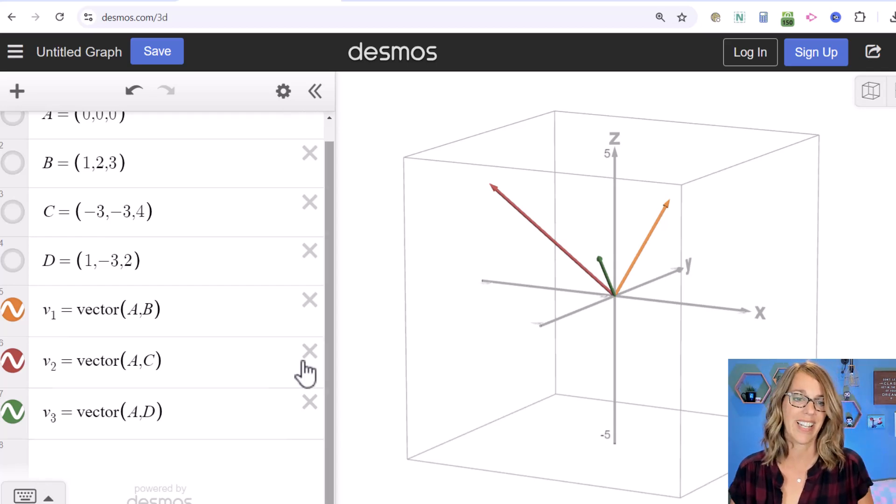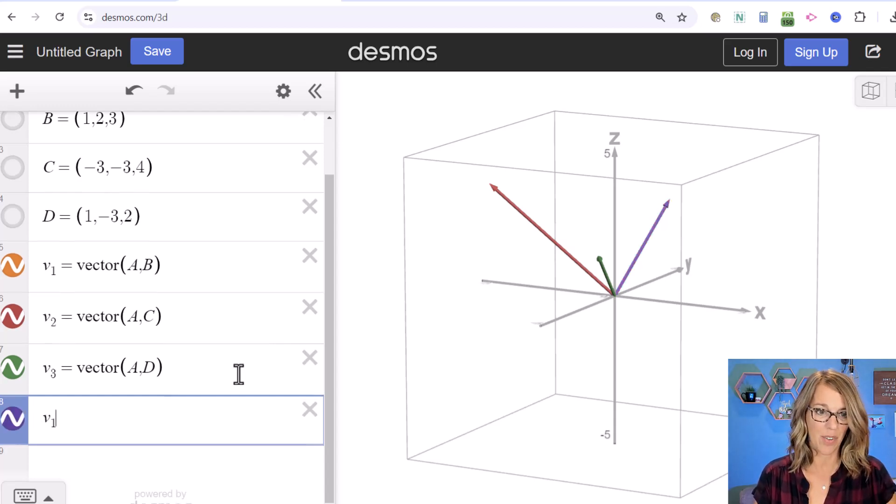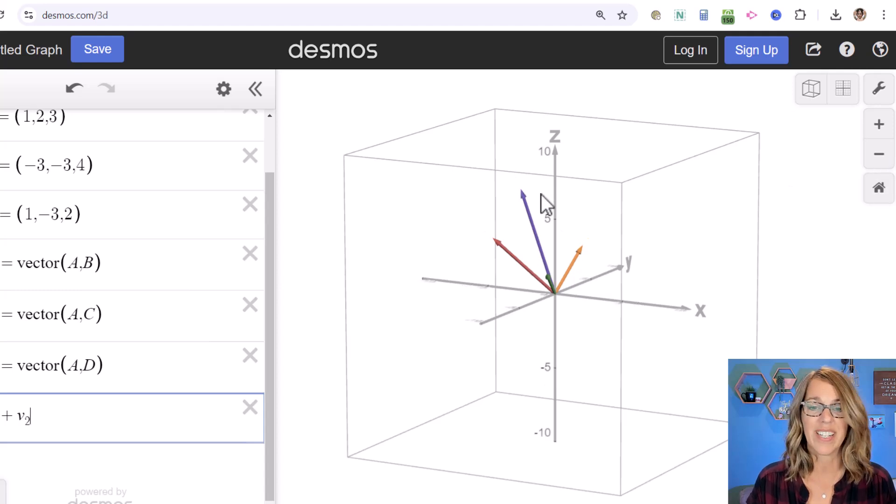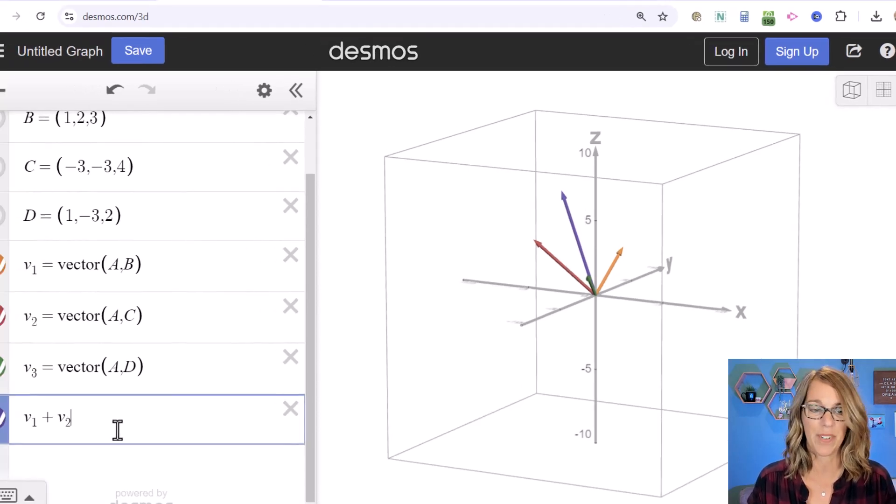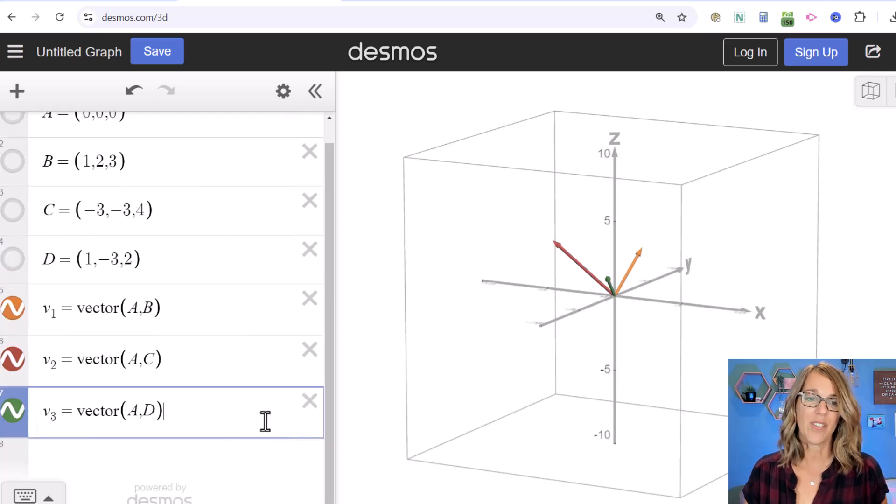Let's do some operations. The first operation is to add two vectors together: v₁ + v₂. Notice it's cut off without the arrow, so I need to zoom out a bit. There's the purple vector showing the sum.